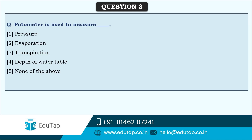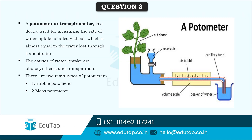Next, a potometer is used to measure transpiration. A potometer, which is also called a transpiranometer, is a device used to measure the rate of water uptake by a leafy shoot. The water uptake is almost equal to the water loss through transpiration — this is the principle behind the potometer. This is the basic structure of a potometer.